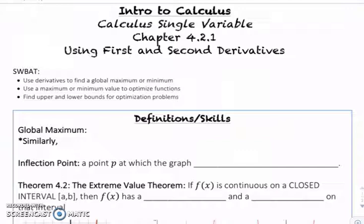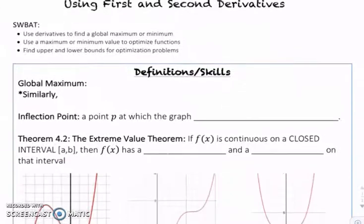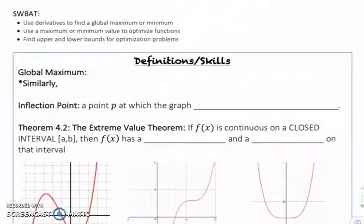So chapter four, we are moving on to section two. Basically this is taking the stuff that we've been doing about finding local maxes and mins and learning how to find a global max or min but on a particular interval. A global maximum is the largest maximum that exists on the function, and similarly a global minimum is the lowest possible y value on the function.